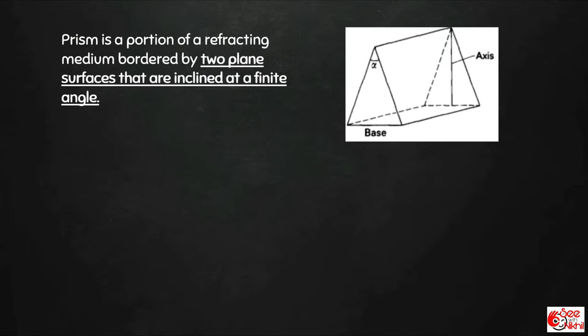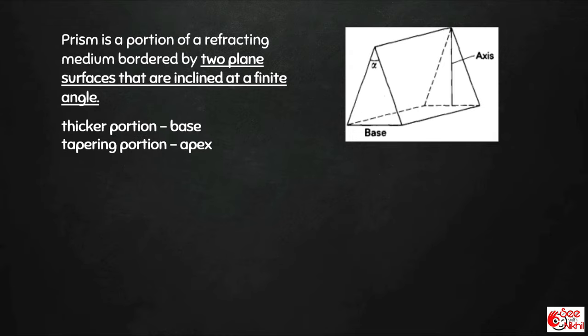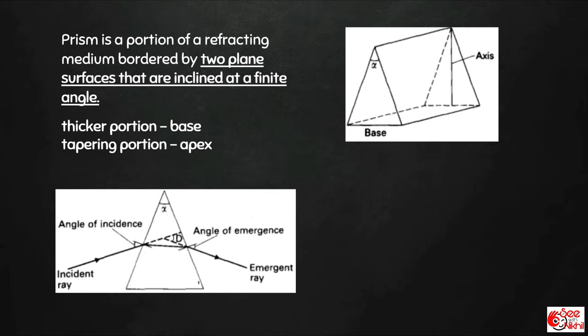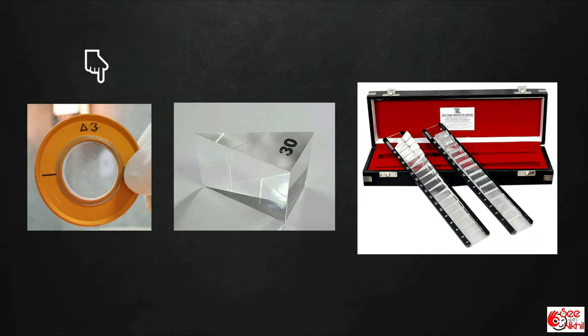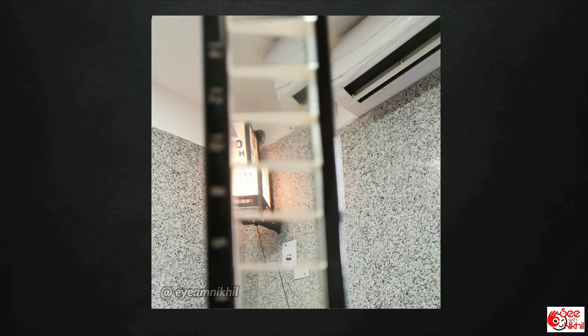A prism is a portion of refractive media bordered by two plane surfaces that are inclined at a finite angle. The thicker portion is known as the base and the tapering portion the apex. Looking at the optics of a prism, it bends the incident ray of light towards the base. So if we trace the emergent ray backward, it appears to come from a point more towards the apex — the image of the object is shifted towards the apex. Prisms commonly used in ophthalmology include trial prism, loose prism, and prism bar, which consists of multiple prisms mounted over a bar in a graded manner, so with progressively increasing power, displacement of the image keeps increasing.